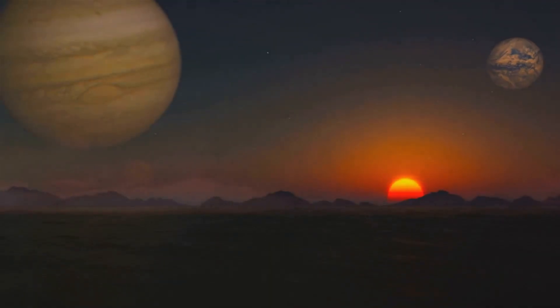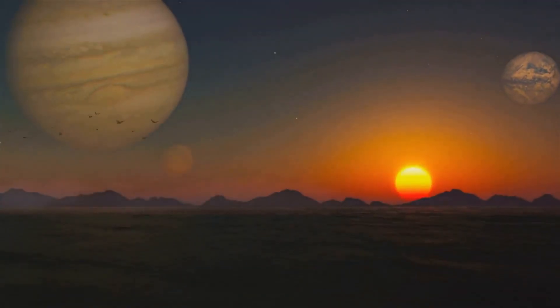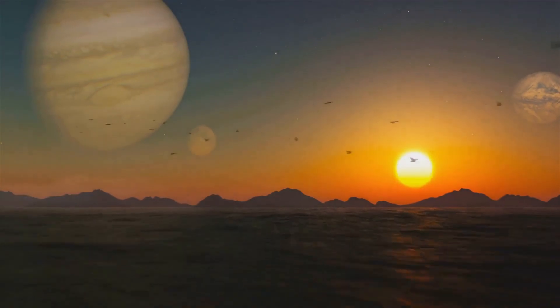Take for instance HD 189733b, a gas giant where it rains glass sideways in its howling 2,000 km per hour winds. Or consider Kepler-16b, a world where you'd witness a double sunset, much like Luke Skywalker's home planet in Star Wars.